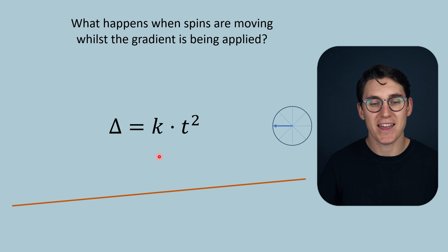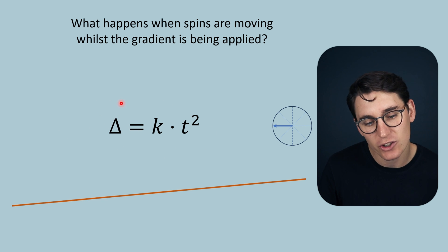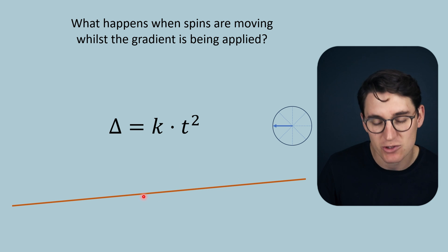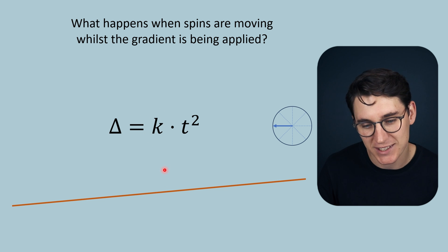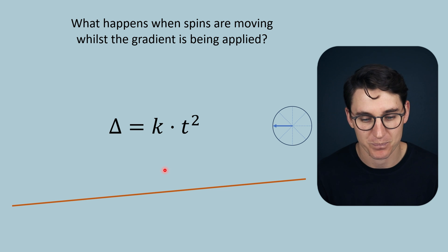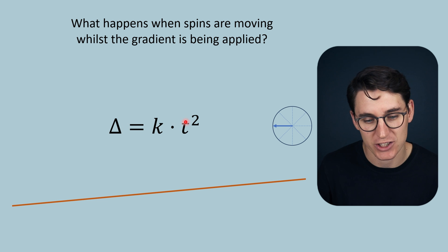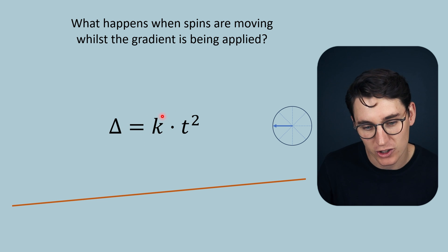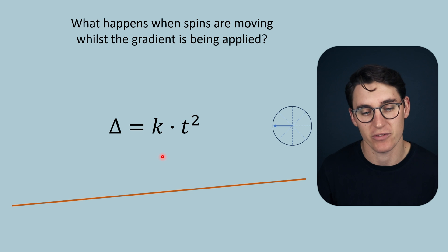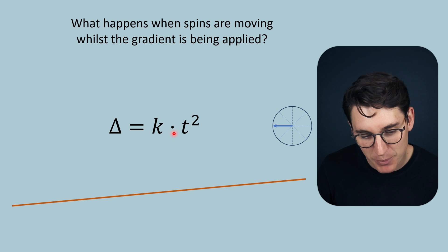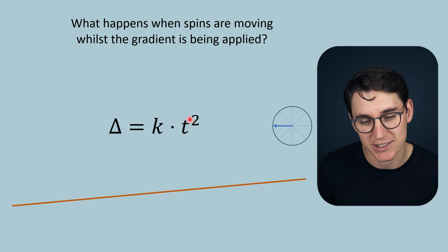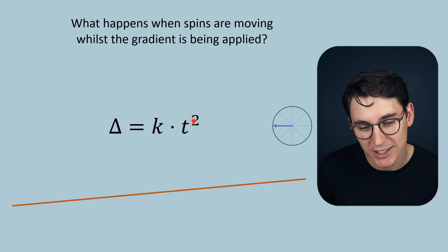To calculate the phase change, we use a formula that makes two assumptions: gradient strength remains constant, and the spin moves at a constant velocity parallel to the gradient. The phase change is determined by a constant based on the velocity of the blood, the strength of the gradient, and the period of time the gradient is applied for. The longer we apply the gradient, the more the phase shift — there is an exponential phase shift.